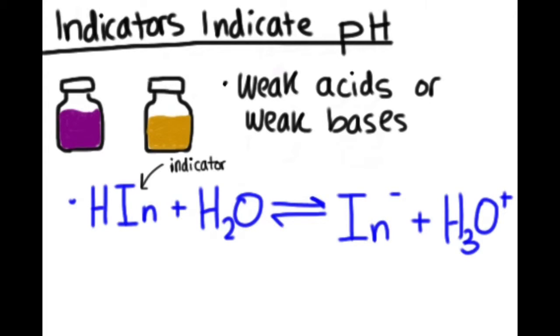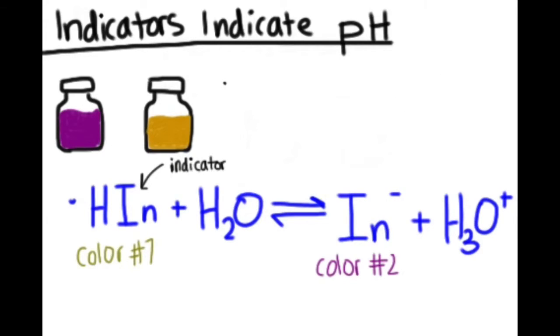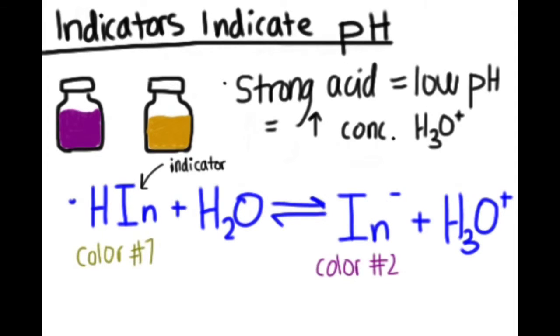In an indicator, the molecules of HIN are one color, while the anion IN- is another. The pH will determine which color is visible. Acids have a strong concentration of hydronium ions and low pHs. When an indicator reacts with a very acidic solution, the high concentration of hydronium ions increases the product. Le Chatelier's principle then takes effect and the reaction shifts to the left of the equation, producing more reactant, which is visible as color one.